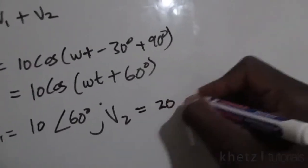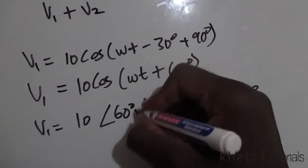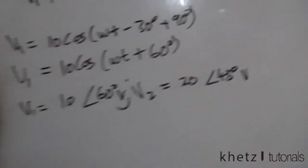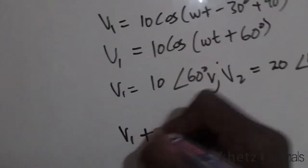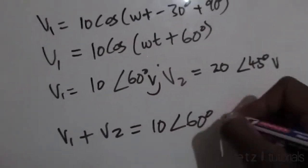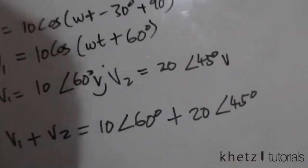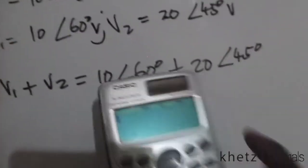Now v1 + v2 will be 10∠60° added to 20∠45°. You can add these up using your calculator. Make sure your calculator is in degrees and in complex form.